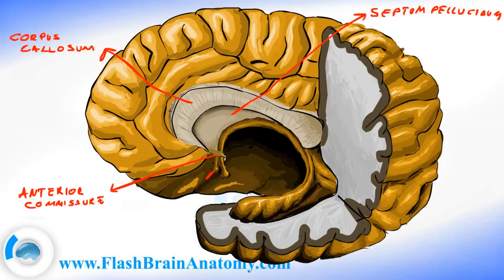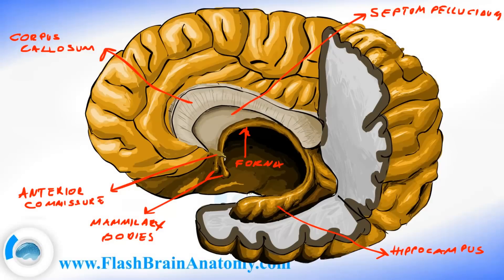These two bodies were the mammillary bodies. Then we had the fornix and the hippocampus over here. We had the lateral ventricle — this space over here.